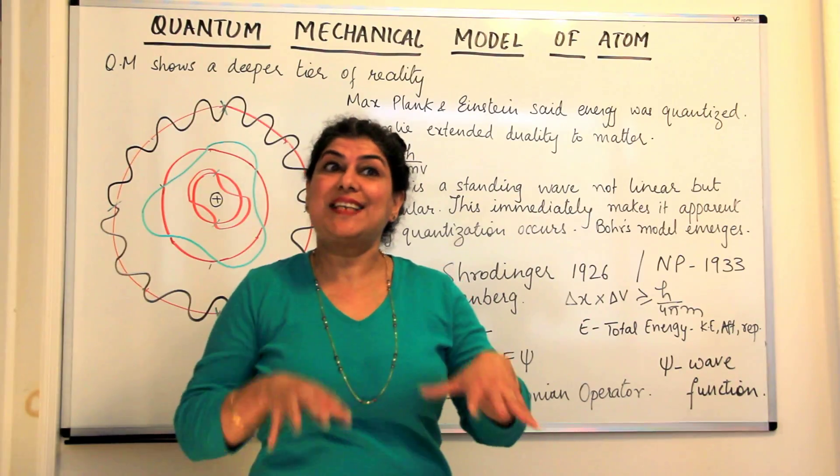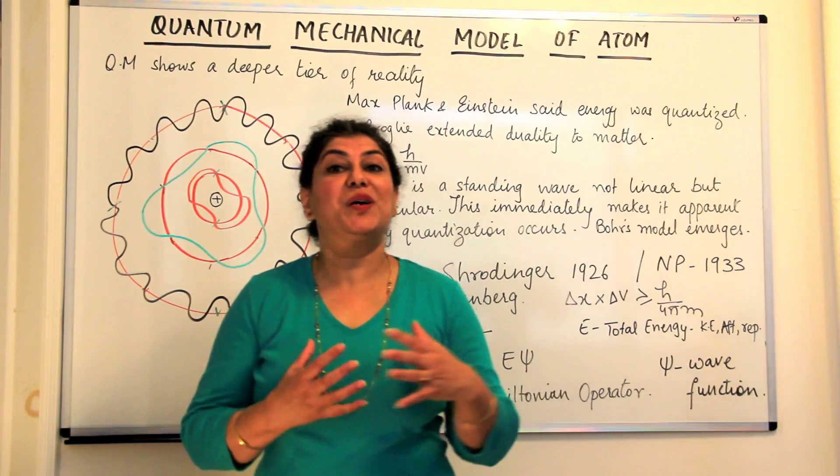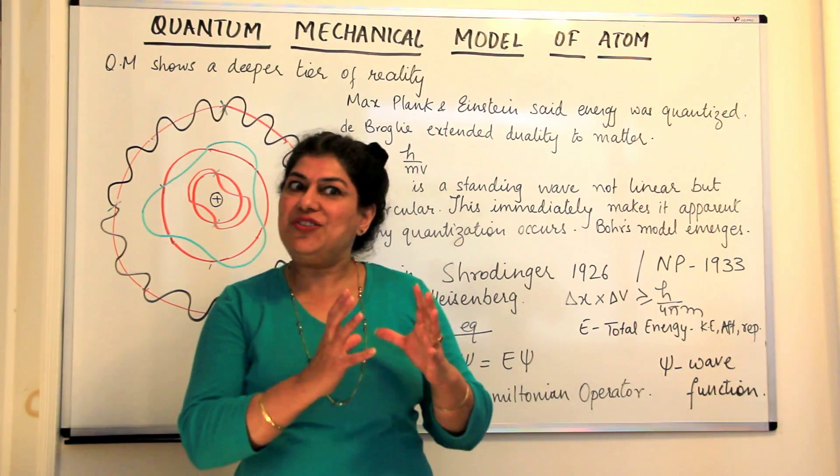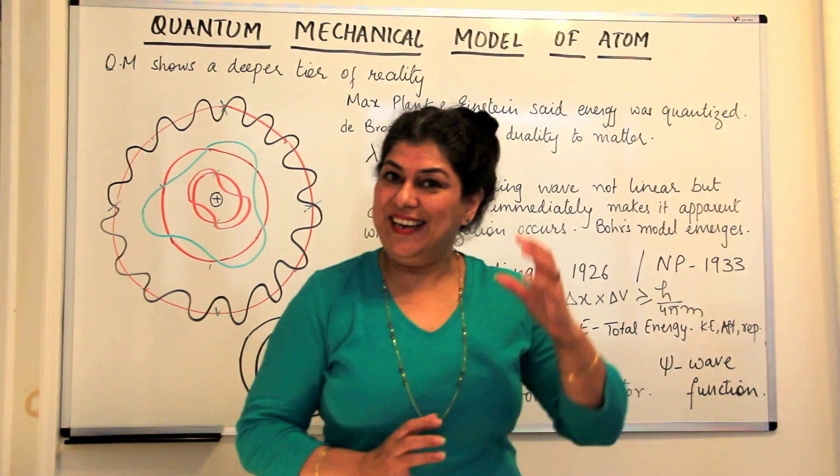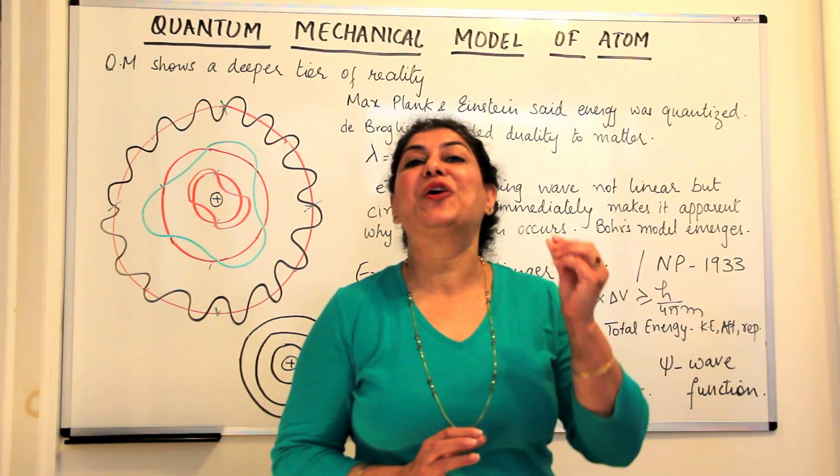So, but this house is my address. So these quantum numbers were the address of an electron. They told you the address of an electron, and this address of an electron in the chemical world or in the scientific world is known as the orbital.